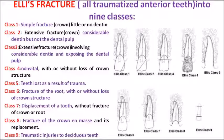Class 7 involves only slight displacement of the tooth from its original position. There is no significant extrusion or intrusion — just a slight displacement of the tooth within its socket.